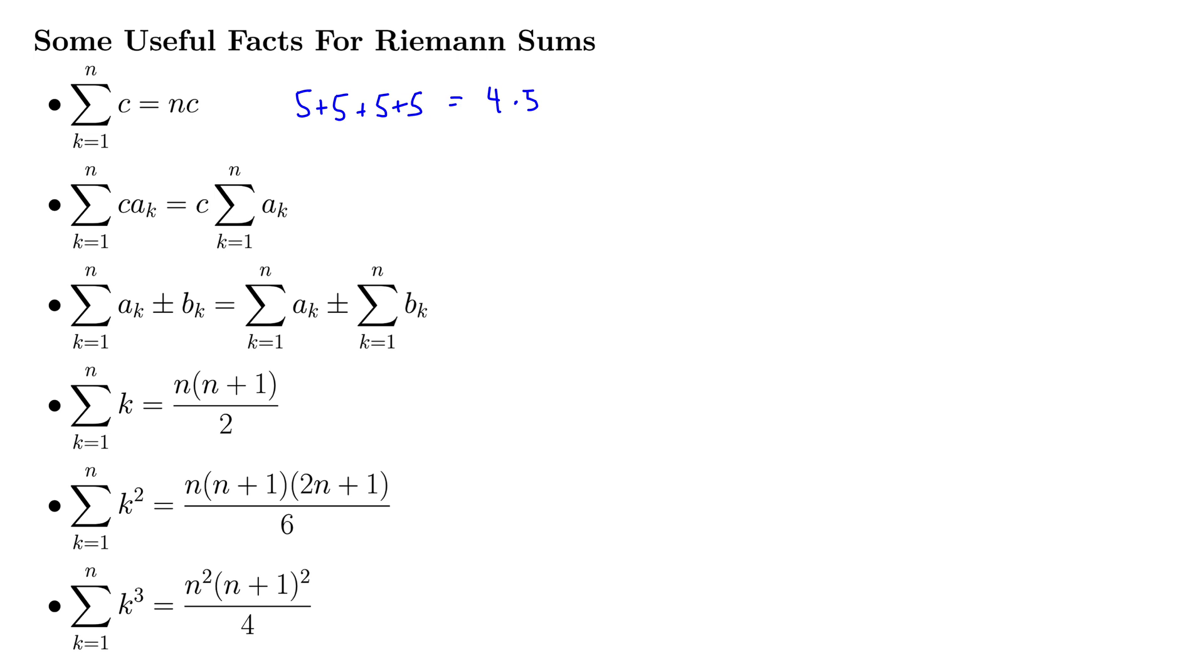The second one says if we have a sum with a constant inside, so this is the sum with a c times a sub k, what it tells us is that constant can come outside of the sum to the front.